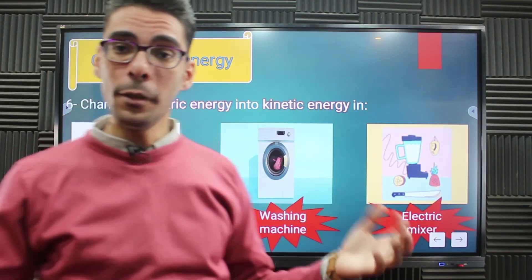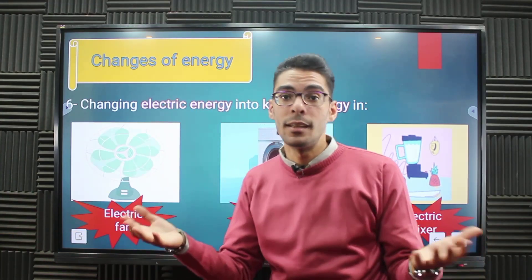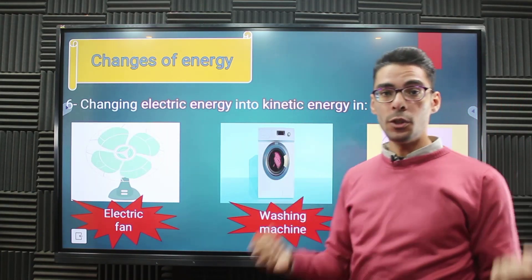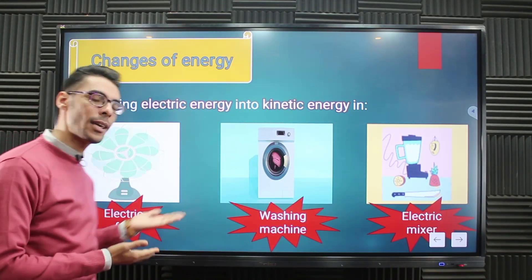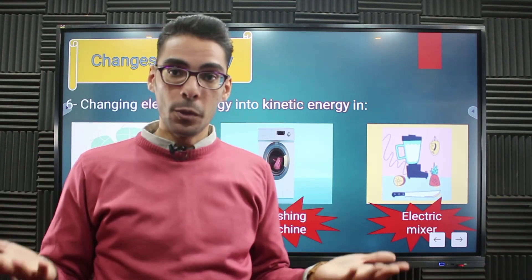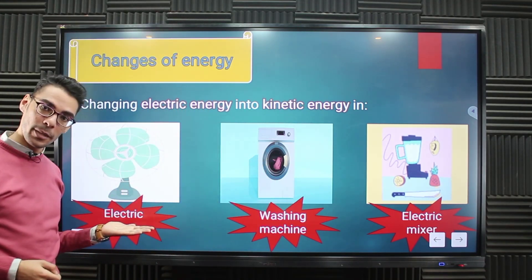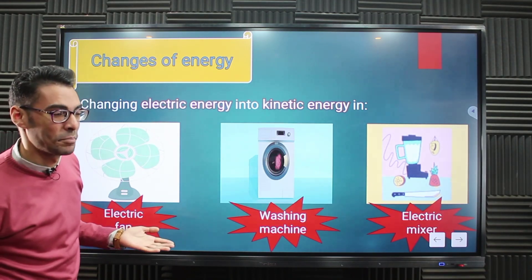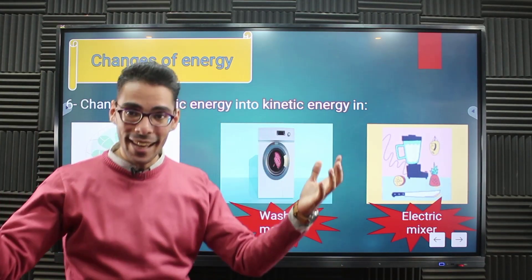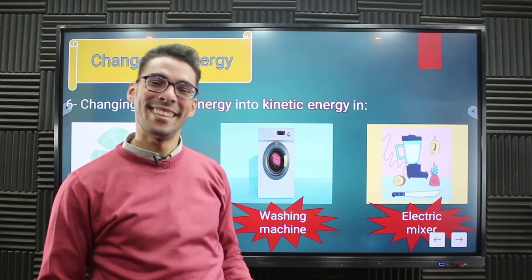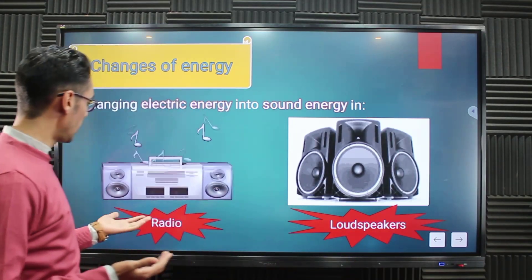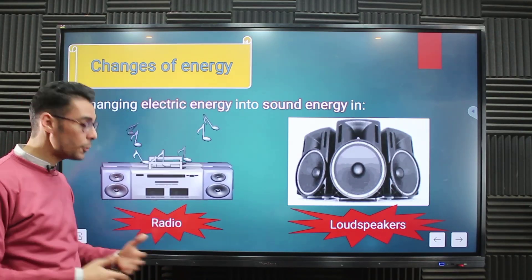All electric devices use the same source of energy — electricity. So the electric fan, the washing machine, and the electric mixer all use electric energy to work. But what is produced? The electric fan produces kinetic energy — it's movement. The washing machine also produces kinetic energy. And the electric mixer also produces kinetic energy. What about the electric radio? It's an electric device, so it uses electric energy and produces sound energy.